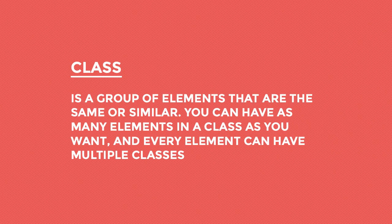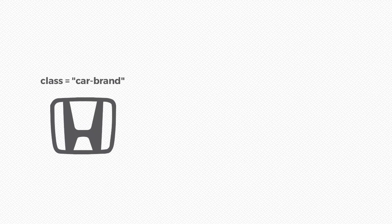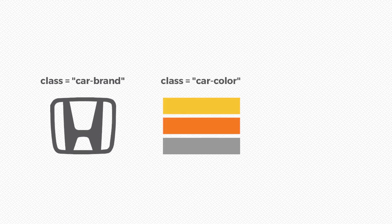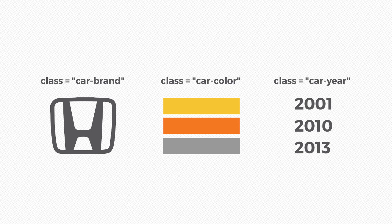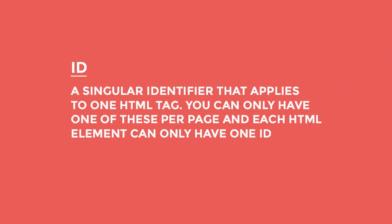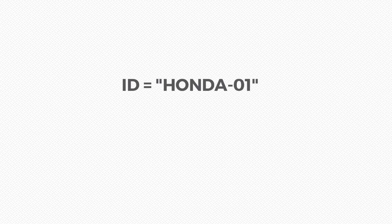Each one of them can be used to give different elements different styles. But what is the difference between a class and an ID? A class is a group of elements that are the same or similar. You can have as many elements in a class as you want, and every element can have multiple classes. If it was a car, there would be a class for the brand of the car like Honda, or the color of the car like gray, or the year it was made, 2001. An ID is a singular identifier that applies to exactly one HTML tag. You can only have one of each ID on a webpage and each HTML element can only have one ID. This would be like the serial number for your gray 2001 Honda — there can only be one like it.